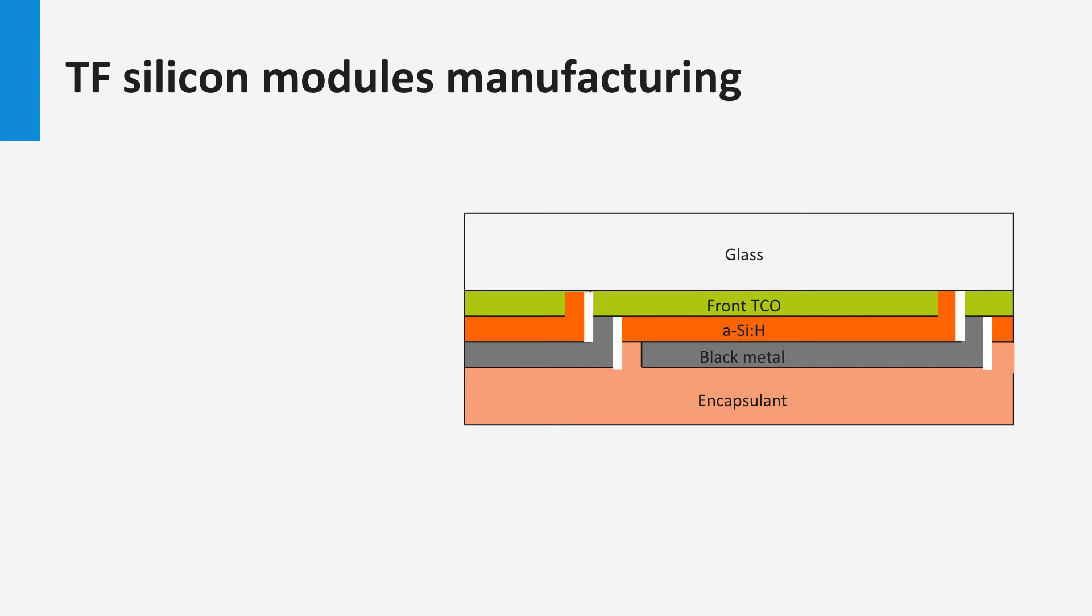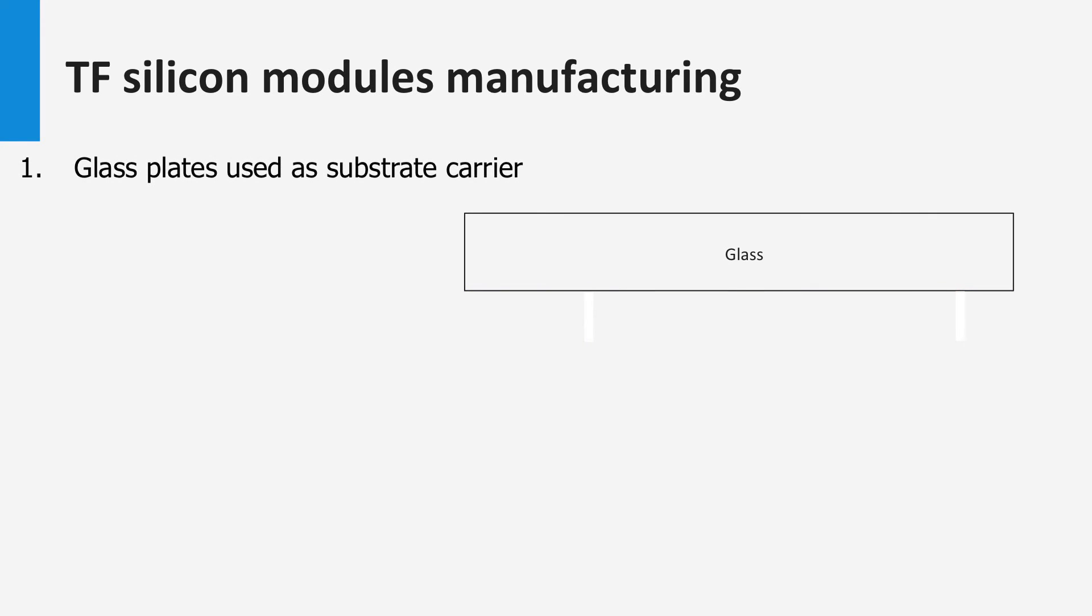The configuration of solar modules of thin film PV technologies are different from those based on crystalline silicon-based wafers. Here we will show the concept of how the solar cells in a thin film PV technology are processed and interconnected. We will show it here for a thin film silicon PV technology. In the next blocks, we will discuss other thin film technologies like CIGS and cadmium telluride. Similar interconnection schemes are being used for these technologies. The solar module and its interconnection is processed in one process sequence. The substrate carrier of the module is a large glass substrate.